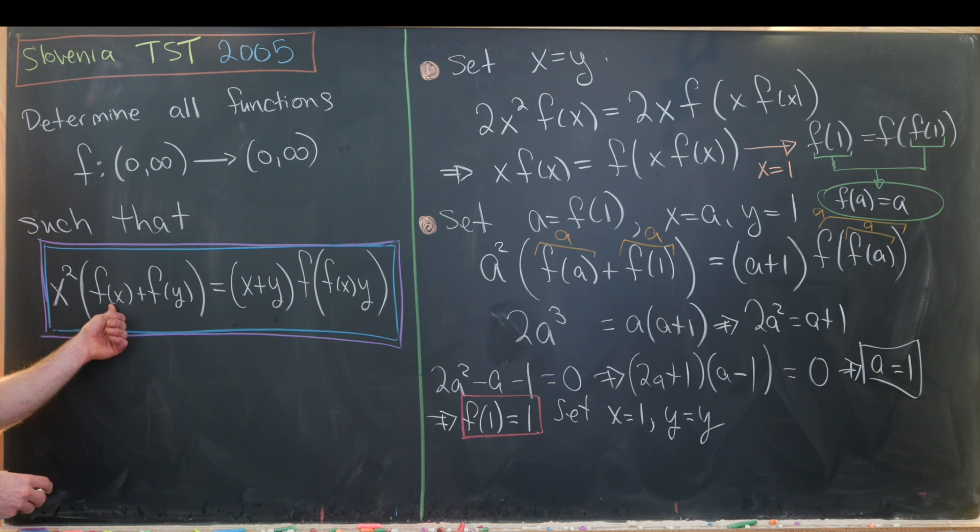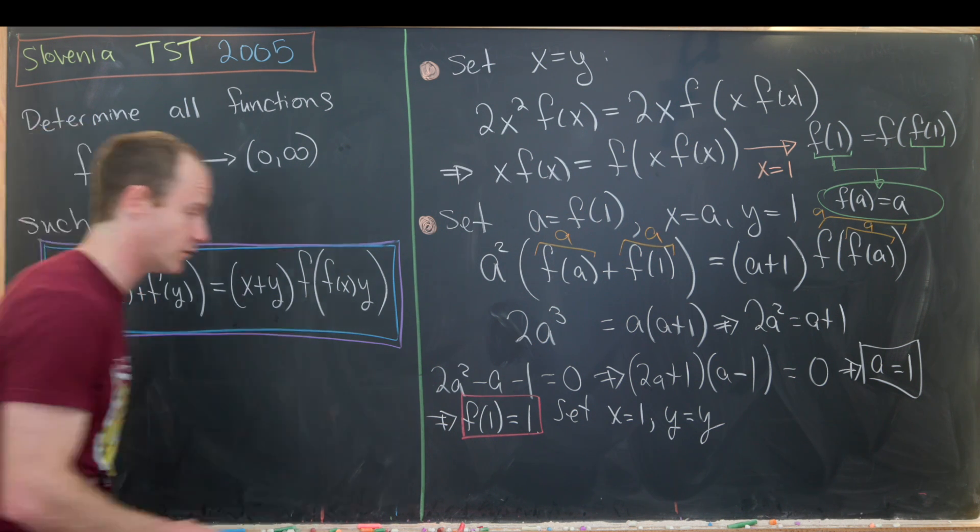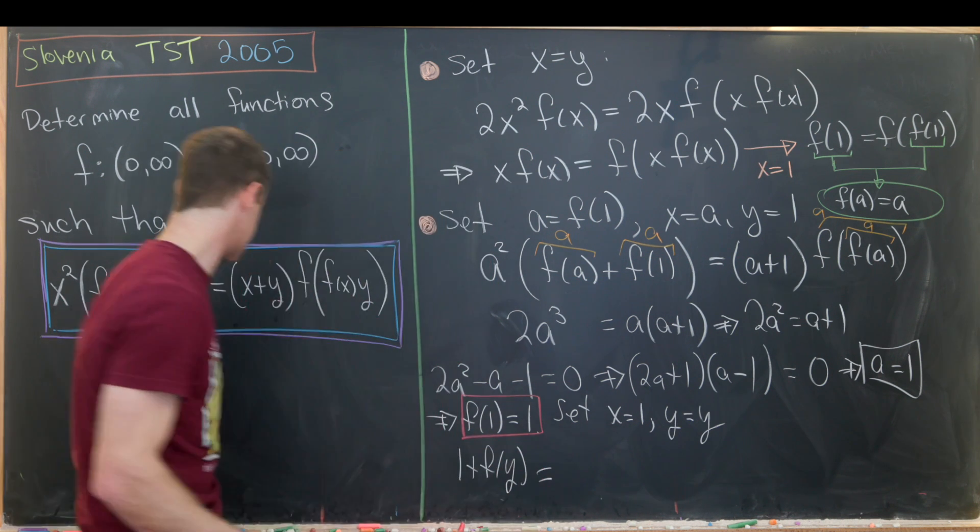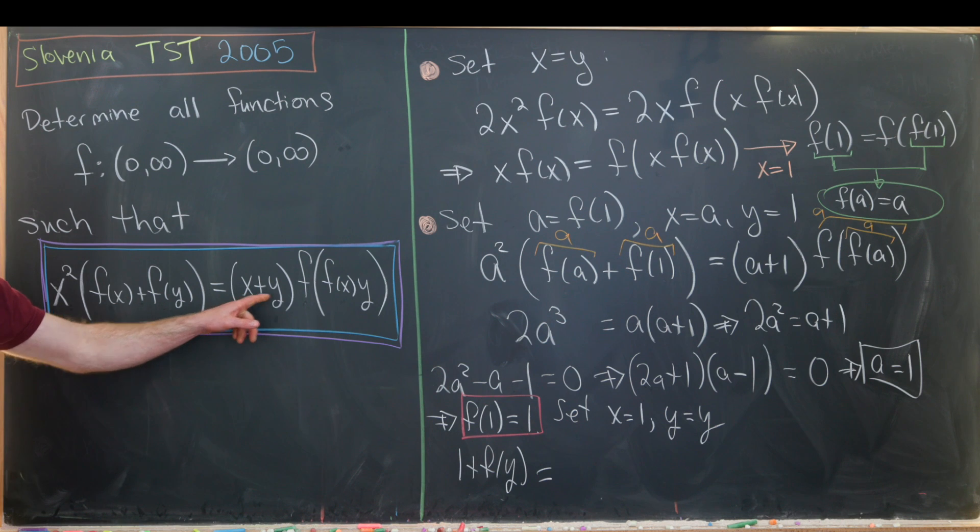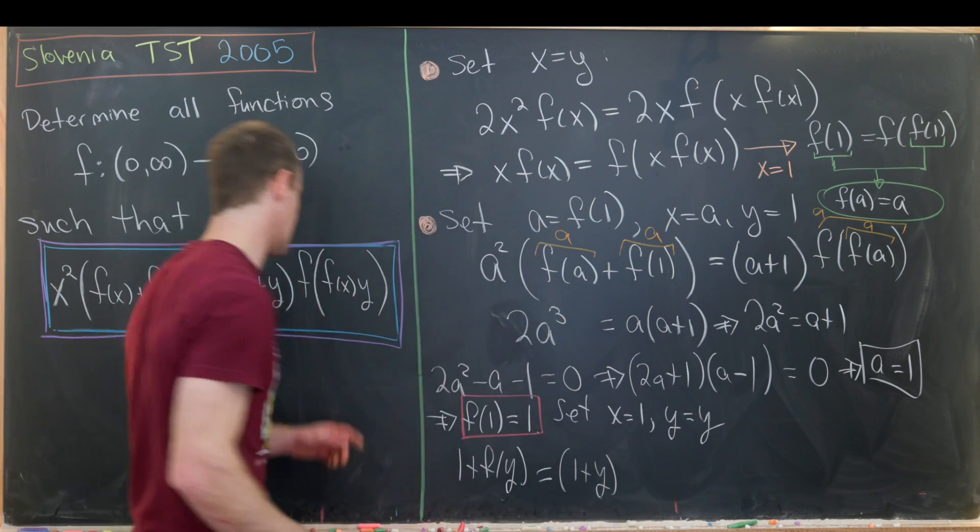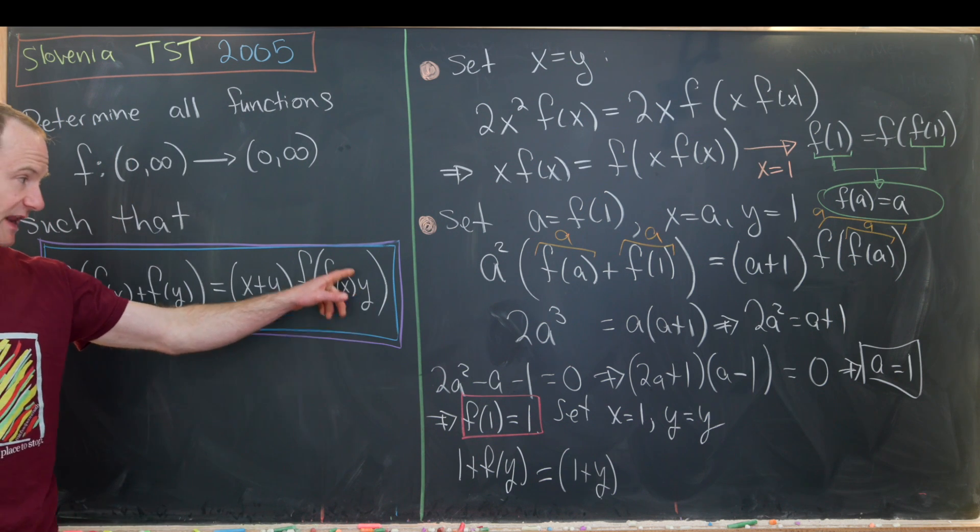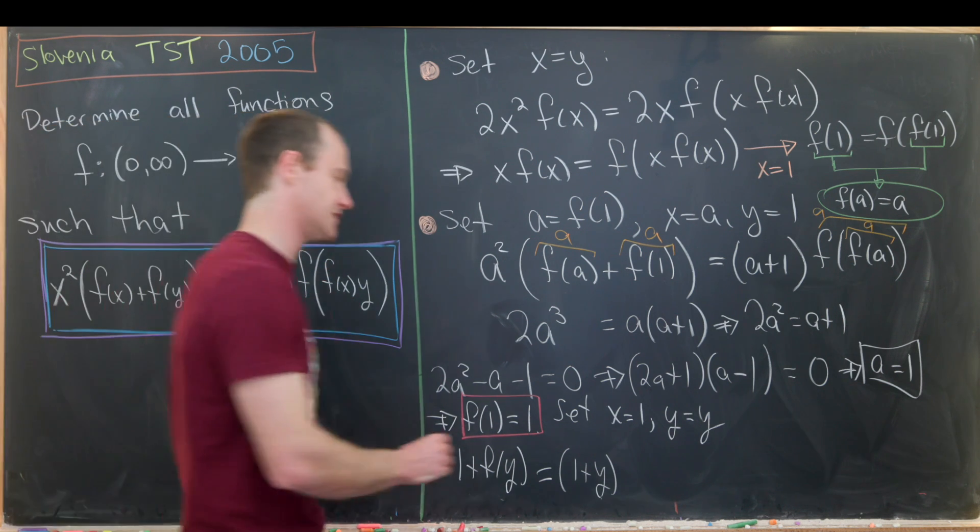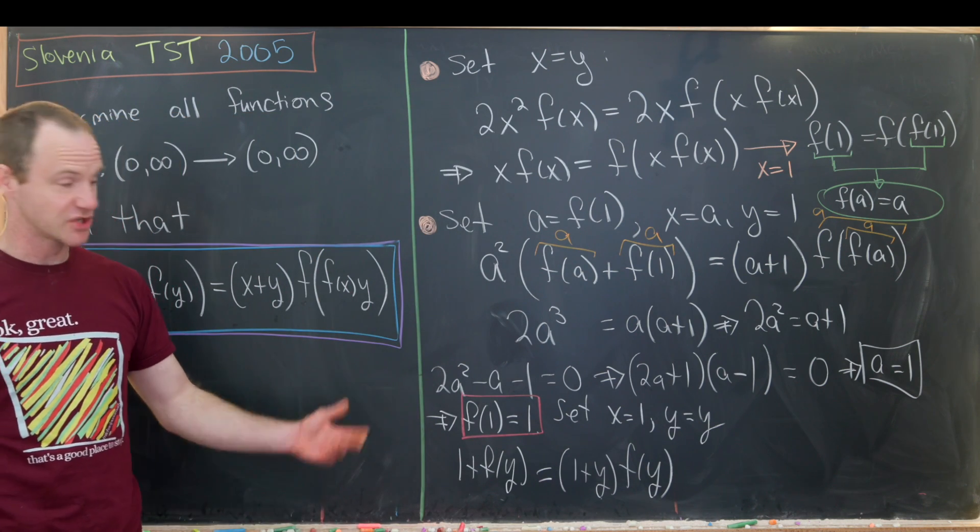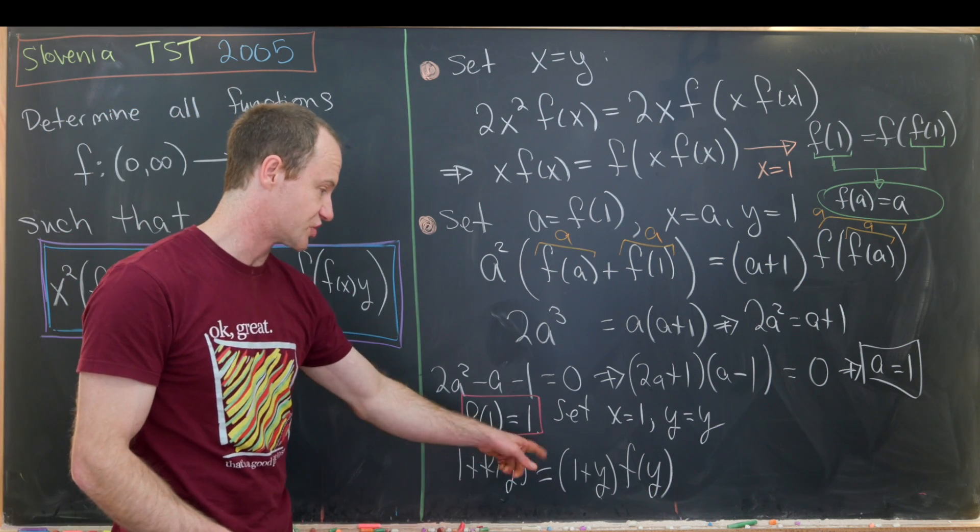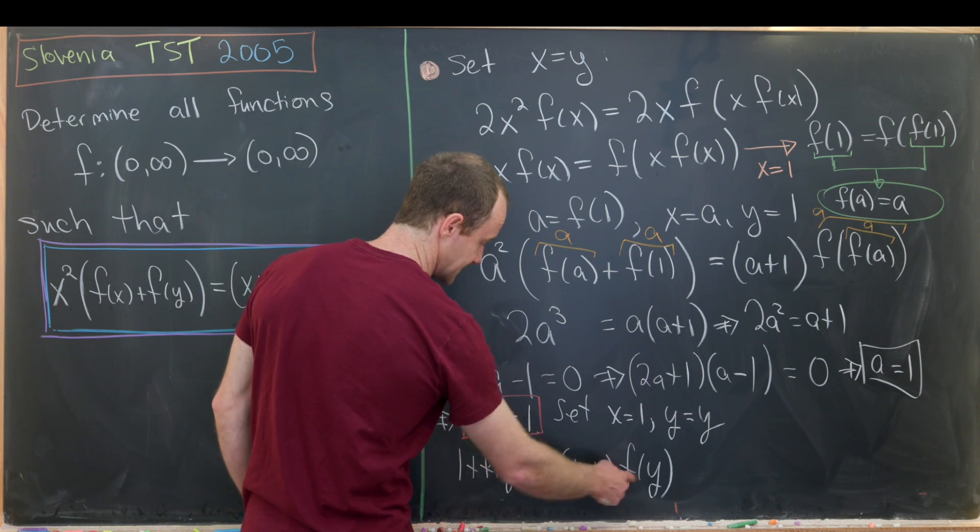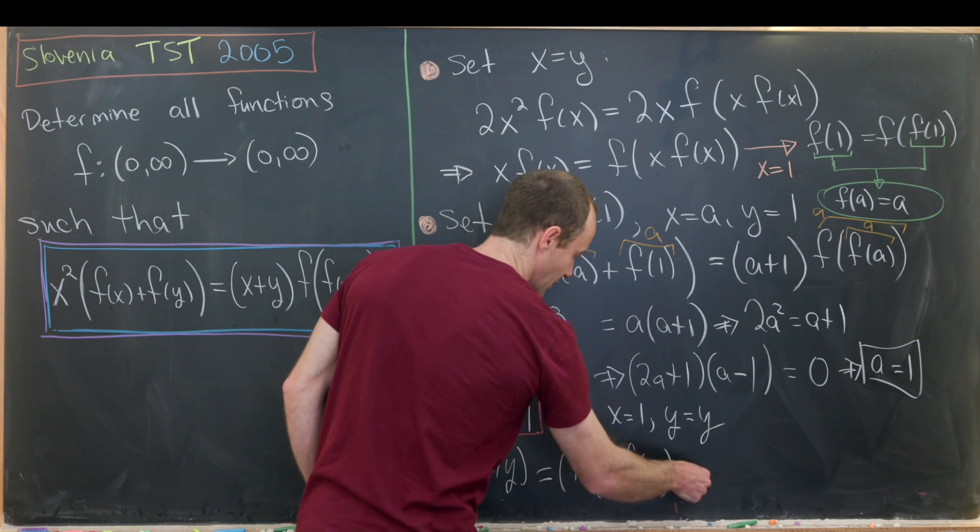So we'll have 1² here. And then we'll have f(1), which is equal to 1, plus f(y). So this will be 1 + f(y) on the left hand side. And over here, we'll have 1 + y times f evaluated at f(1) times y, which is one times y. So that's f(y). But that's actually pretty easy to solve. Notice we can distribute out this right hand side, we get one times f(y), which is f(y), and then y times f(y).